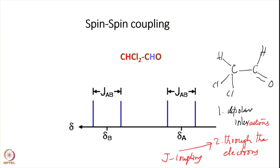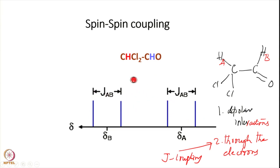The result of J coupling is that a resonance at chemical shift delta_B is split into two lines, and similarly the resonance at delta_A is split into two lines. The separation between the two lines is the spin-spin coupling constant J_AB. The question is: why and how does this splitting occur?